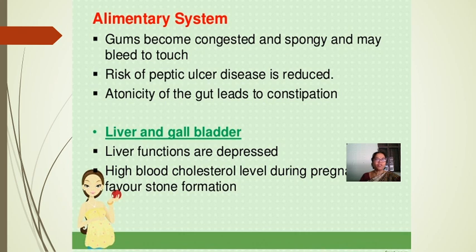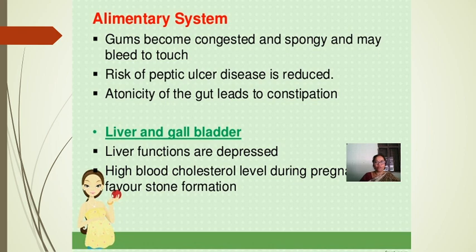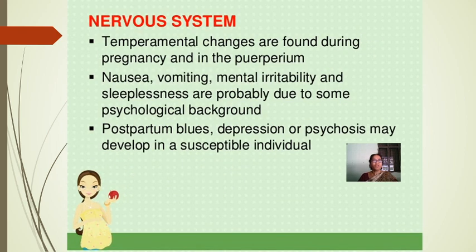Alimentary system: gums become congested and spongy and may bleed on touch. Risk of peptic ulcer disease is reduced, and atonicity of the gut leads to constipation. Liver and gallbladder: liver functions decrease, and high blood cholesterol levels during pregnancy favor stone formation, so mothers should be advised to drink more water.